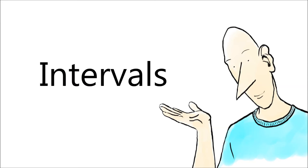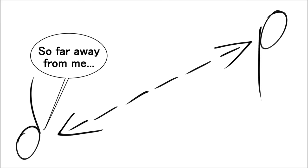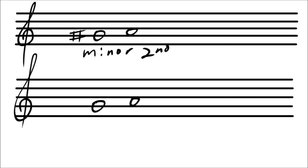So there are these things called intervals. Intervals are the distance between two notes. The smallest ones, other than a perfect unison, are the minor second, which sounds like this.